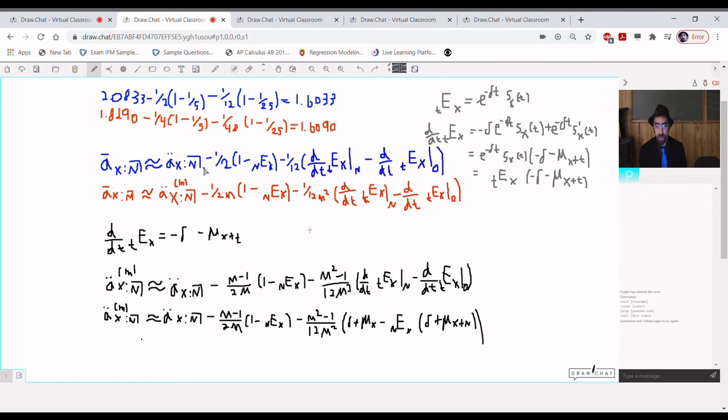Now let's use that to estimate the continuously compounded annuities both annually and mthly. So the annual one will be a double dot x colon angle n minus 1/2 of 1 minus endowment function on x n years in the future minus 1/12 of the derivative with respect to time of endowment function on x t years into the future, difference in those derivatives between evaluation at n and zero. And the same thing compounded mthly, the only difference is we'll start with the basic mthly which we don't necessarily know and instead of subtracting 1/2 of this 1 minus endowment we subtract 1 over 2m and instead of 1 over 12 it will be 1 over 12m squared.